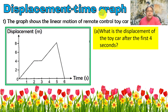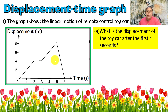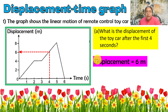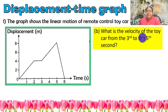Now a displacement-time graph showing linear motion for a remote-control toy car. Question one: what is the displacement of the toy car after the first 4 seconds? We draw a line at 4 seconds and read off the displacement from the graph — the answer is 6 meters.